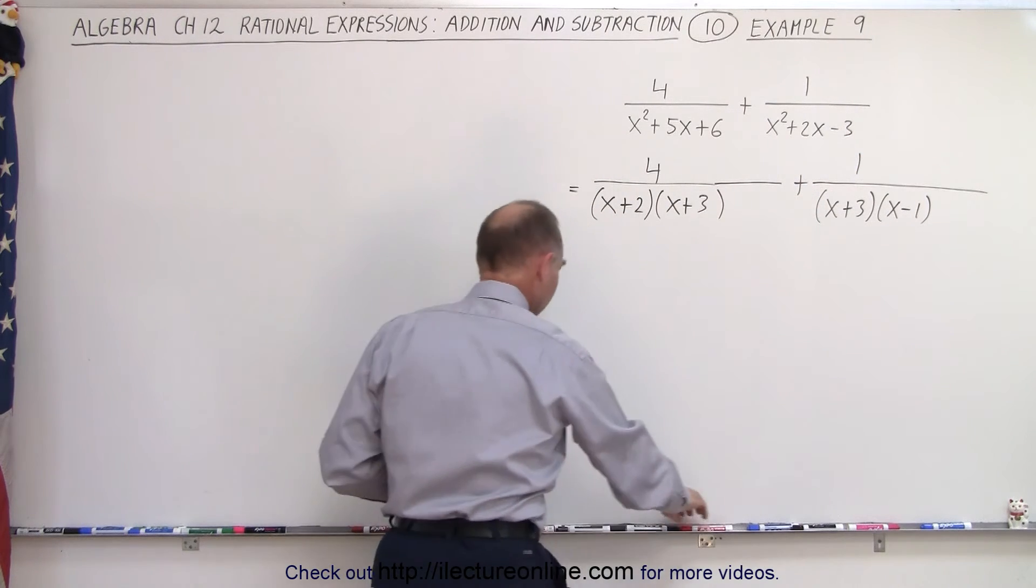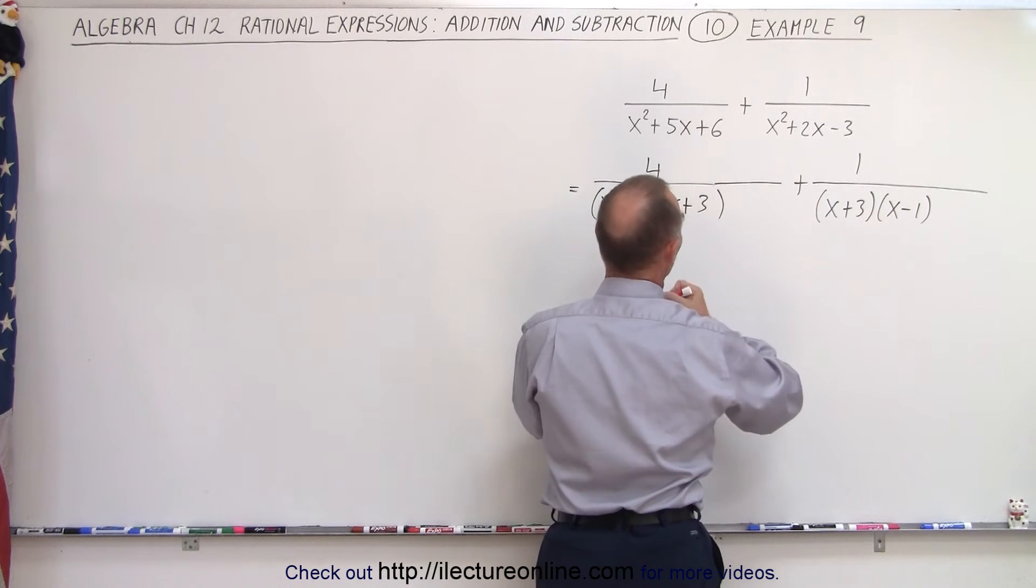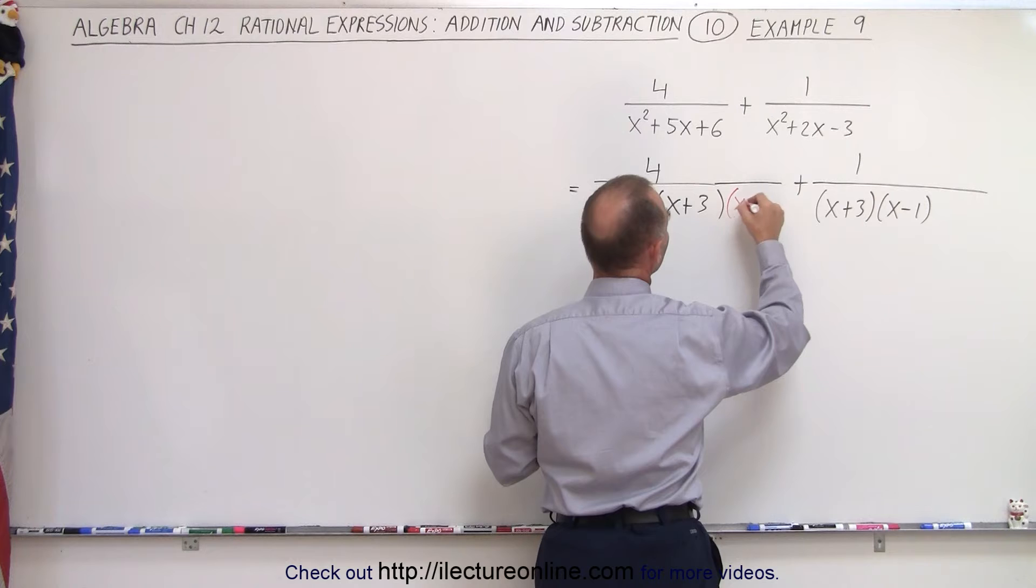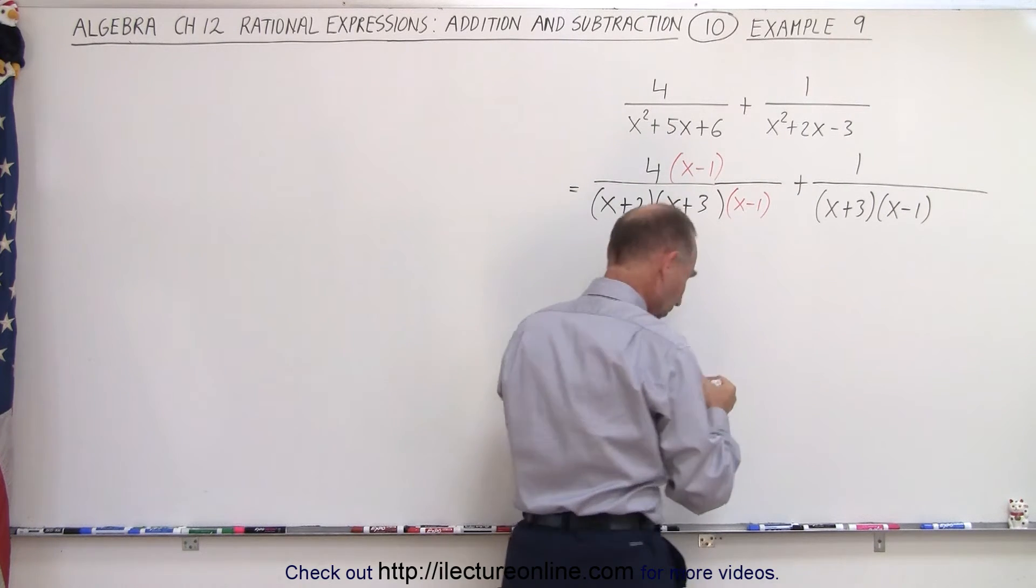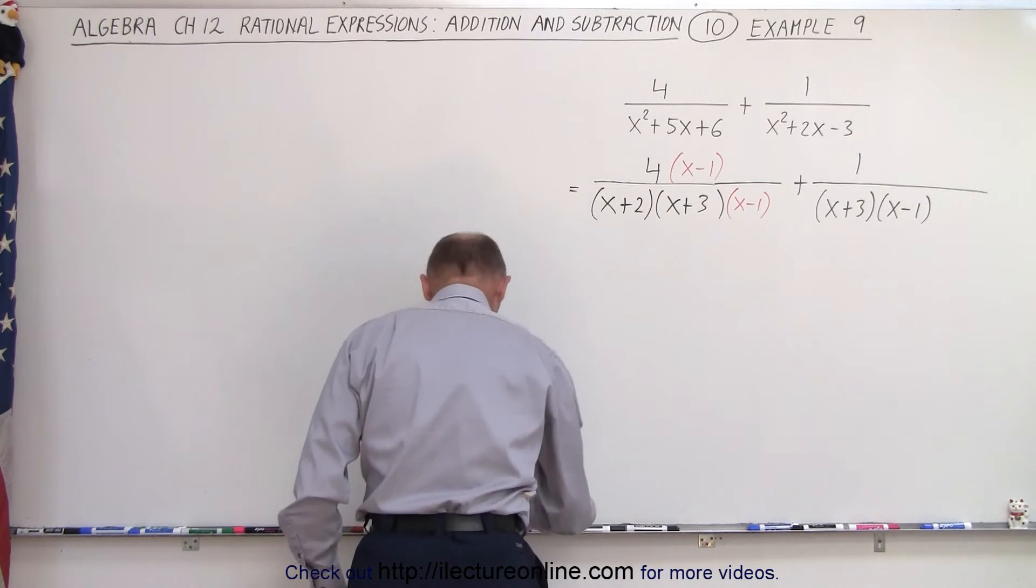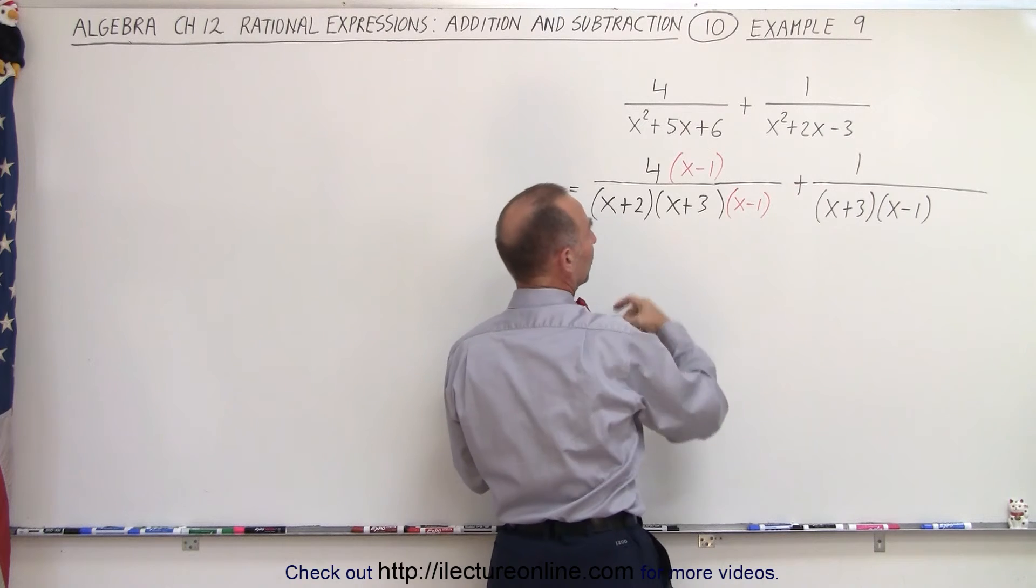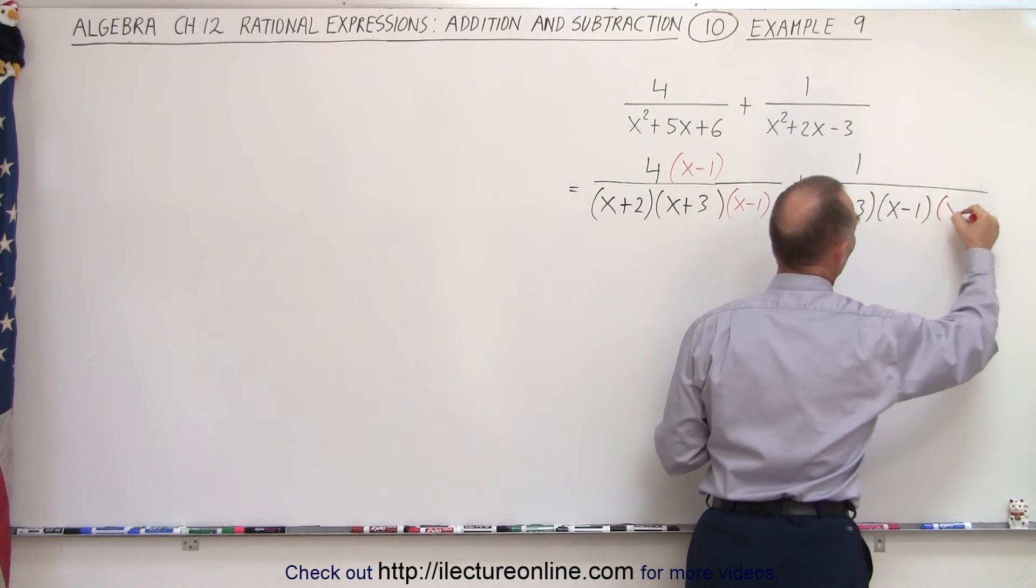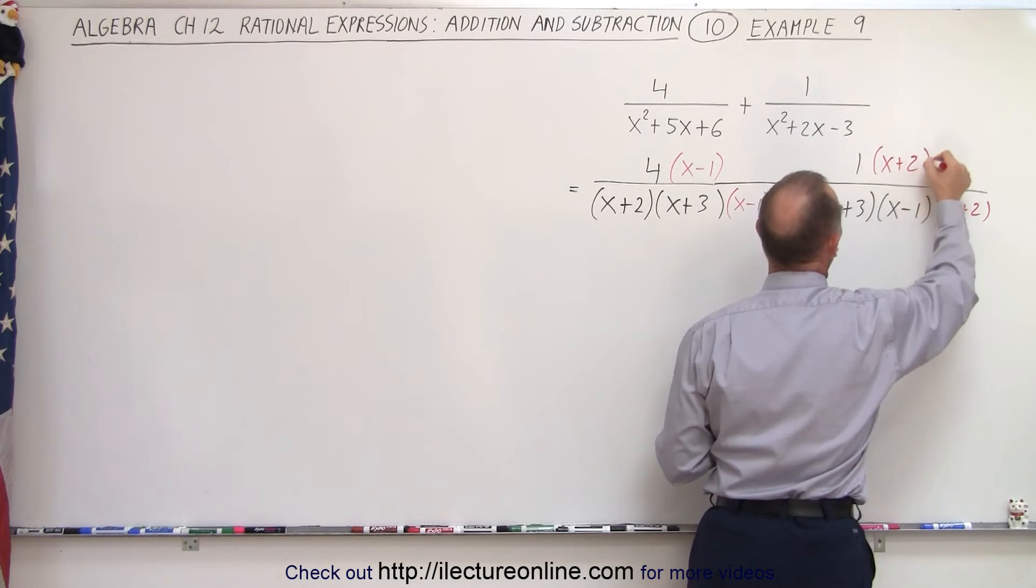So notice that over here, what we're missing is we're missing the x minus 1, so we're going to multiply the denominator and the numerator by x minus 1. And over here, notice we're missing the term x plus 2, so we're going to multiply this by x plus 2, and multiply this by x plus 2 as well.